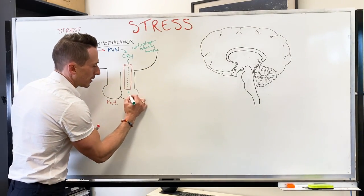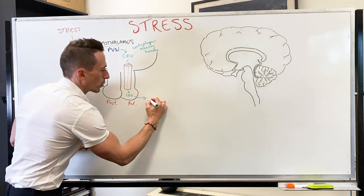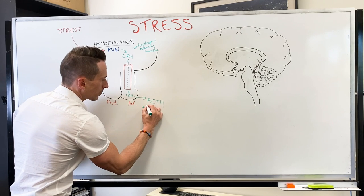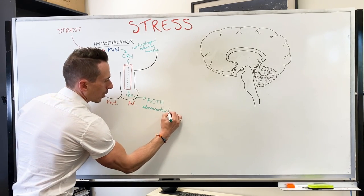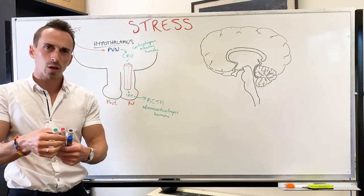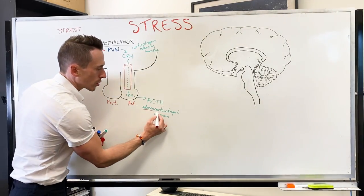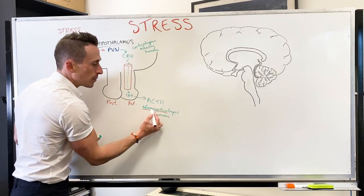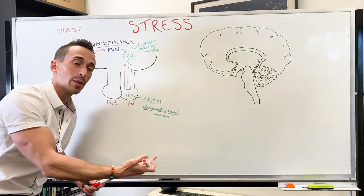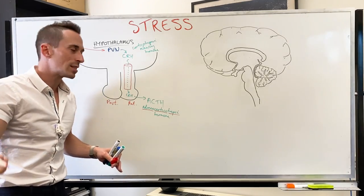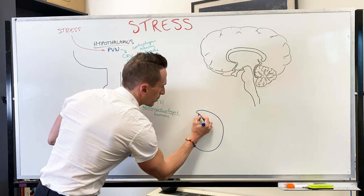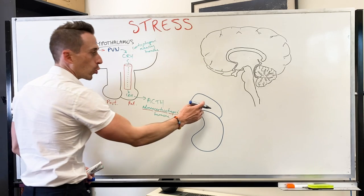At the anterior pituitary, CRH stimulates the release of another hormone which we call adrenocorticotropic hormone, ACTH. Beautifully, it's all in the name — 'adreno' goes to the adrenal gland, 'cortico' goes to the cortex of the adrenal gland, 'tropic' tells you that it's going to stimulate the adrenal gland to release another hormone. That other hormone is cortisol. So ACTH is now in the systemic circulation and it's going to travel until it gets to that little hat that sits on the kidneys called the adrenal gland.